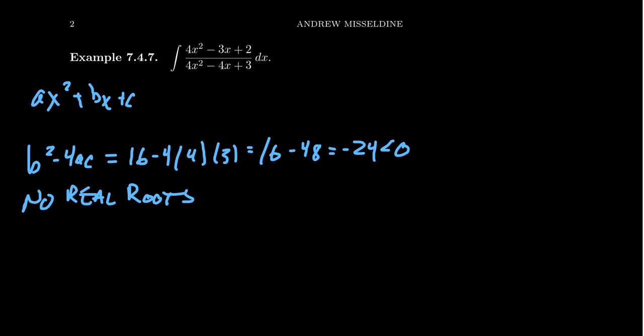That's a negative number, and so what this tells us is that there's going to be no real roots for this denominator. And so the denominator is already irreducible, and we can't, unless we're going to use complex numbers, break this up any more than we already have in front of us.